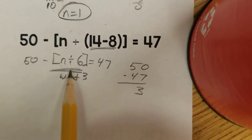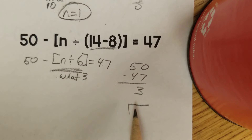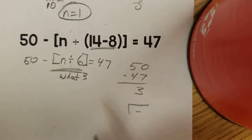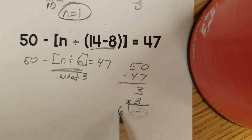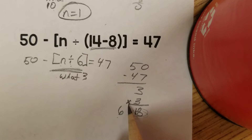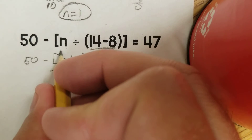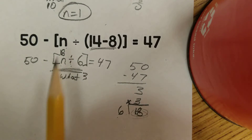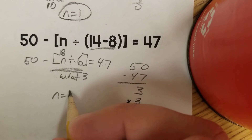This is the one you get confused on because of the division box. If we have something divided by 6, the unknown goes inside the box, 6 goes on the outside, and our answer is 3. To figure out what goes in the box, remember that we check a division problem by multiplying: 3 times 6 is 18. So 18 divided by 6 equals 3. Our n equals 18. Check: 18 divided by 6 is 3, and 50 minus 3 is 47.